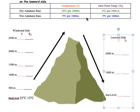The wet adiabatic rate is in blue. This represents what happens once we reach the dew point temperature and get condensation. Condensation requires water molecules to give up energy — they get more organized and release energy, which actually heats the air. You might notice this on warmer mornings after a cloudy night. So adiabatic cooling still happens, but slower because condensation is releasing heat.